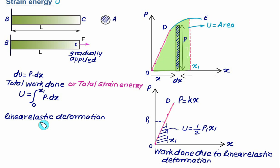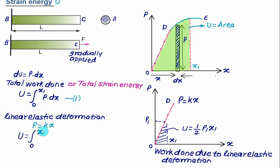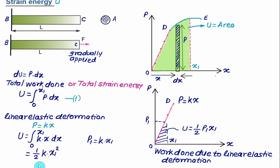In the linear elastic region from O to D, P = Kx. Substituting back into the strain energy equation gives U = integral from 0 to x₁ of Kx dx. Taking K outside the integral gives K times x²/2, so U = ½Kx₁². Since P₁ = Kx₁, we can write the final expression as U = ½ P₁x₁, where the hatched area represents the strain energy up to deformation x₁.